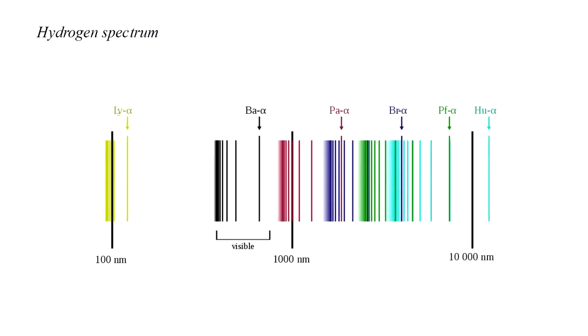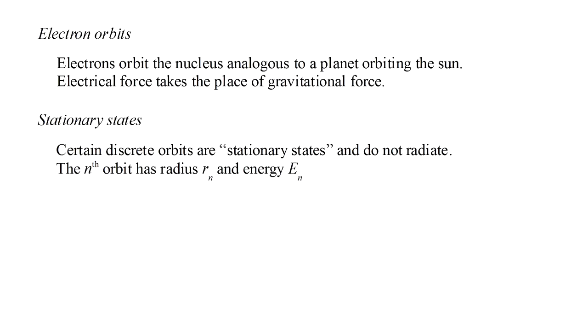Bohr solved both of these with the radical proposal of stationary states. Why don't orbiting electrons radiate away their energy and crash into the nucleus? Because certain orbits are stationary and don't radiate. We can number the orbits one, two, three, and so on, and we'll say that the nth orbit has radius Rn and energy En.